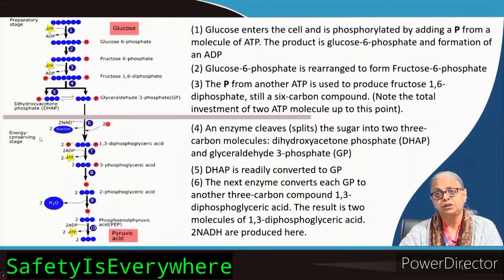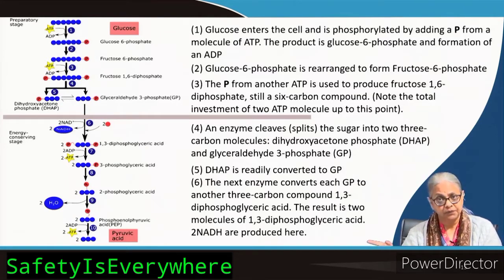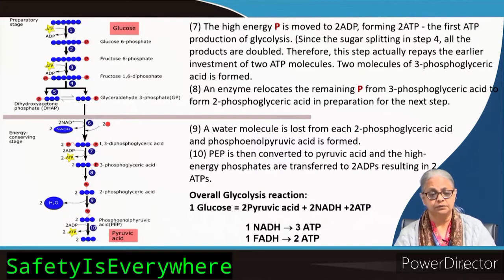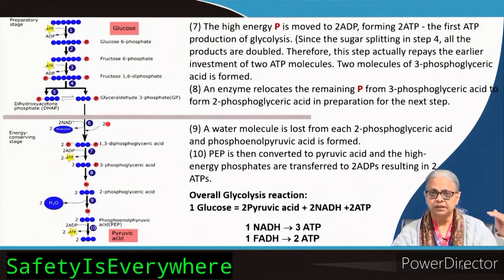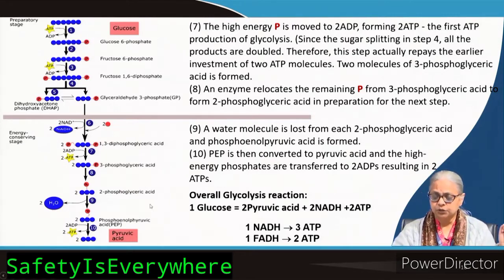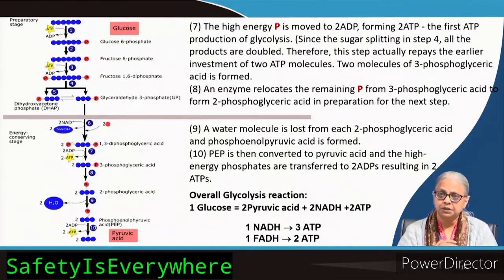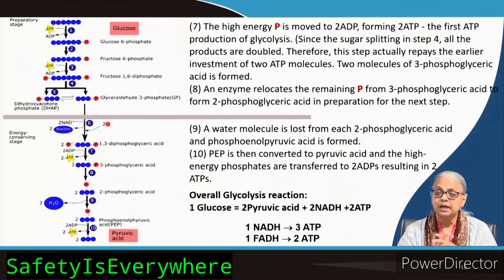Two NADH are also gained. When these two NADH enter the electron transport chain, each NADH will result in three ATPs, so there is a net gain of eight ATPs from glycolysis. The overall glycolysis reaction gives you two pyruvic acids, two NADH, and two ATP net. Remember: one NADH gives you three ATP, and one FADH gives you two ATP.